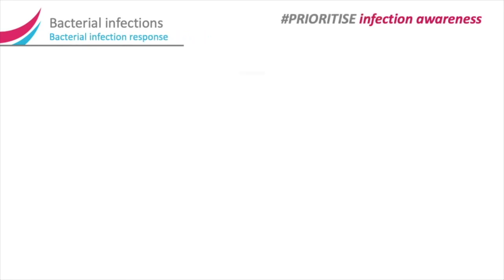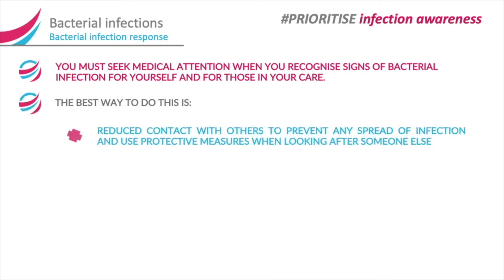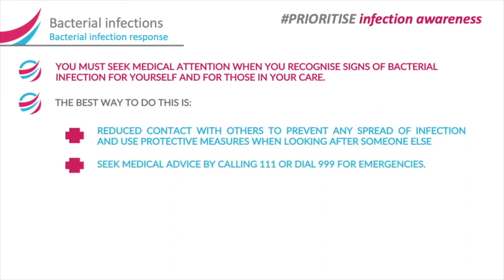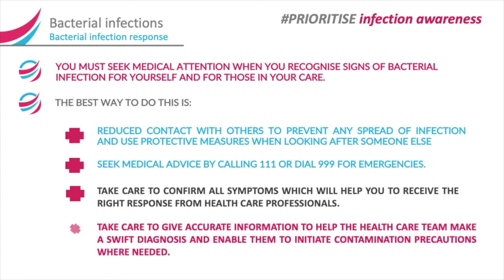Bacterial infection response. You must seek medical attention when you recognise signs of bacterial infection for yourself and for those in your care. The best way to do this is to reduce contact with others to prevent any spread of infection, and use protective measures when looking after someone else. Seek medical advice by calling 111 or dial 999 for emergencies. Take care to confirm all symptoms, which will help you to receive the right response from healthcare professionals. Give accurate information to help the healthcare team make a swift diagnosis and enable them to initiate contamination precautions where needed.